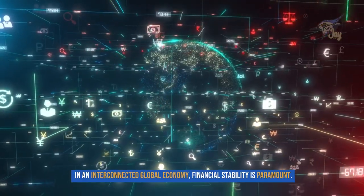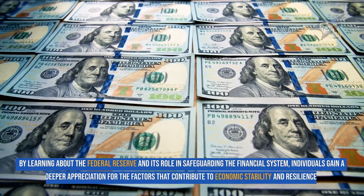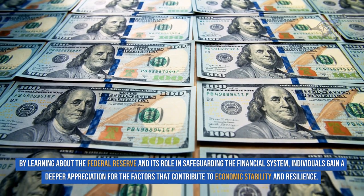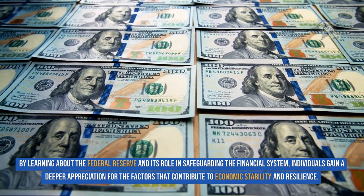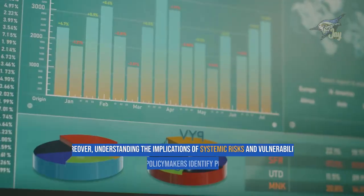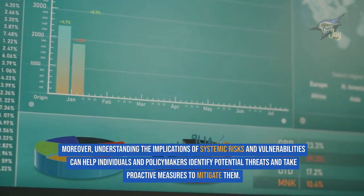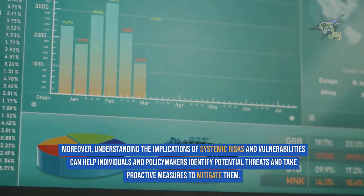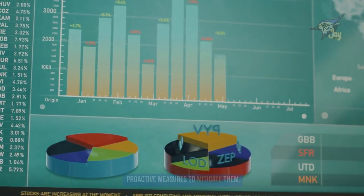In an interconnected global economy, financial stability is paramount. By learning about the Federal Reserve and its role in safeguarding the financial system, individuals gain a deeper appreciation for the factors that contribute to economic stability and resilience. Moreover, understanding the implications of systemic risks and vulnerabilities can help individuals and policymakers identify potential threats and take proactive measures to mitigate them.